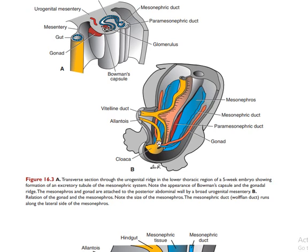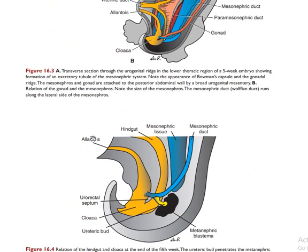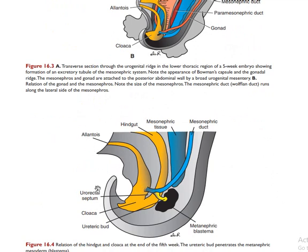The paramesonephric duct and the mesonephric duct both enter at the level of the urogenital sinus. The upper portion of the urogenital sinus is connected to the allantois, and the posterior portion is the cloaca. On the gonadal ridge you have the gonadal line. On the urinary system side, the allantois is here, there is a urogenital sinus, and the structure separating the urogenital sinus from the rectum is the urorectal septum. Here you also have the cloaca, the ureteric bud, and the metanephric blastema.